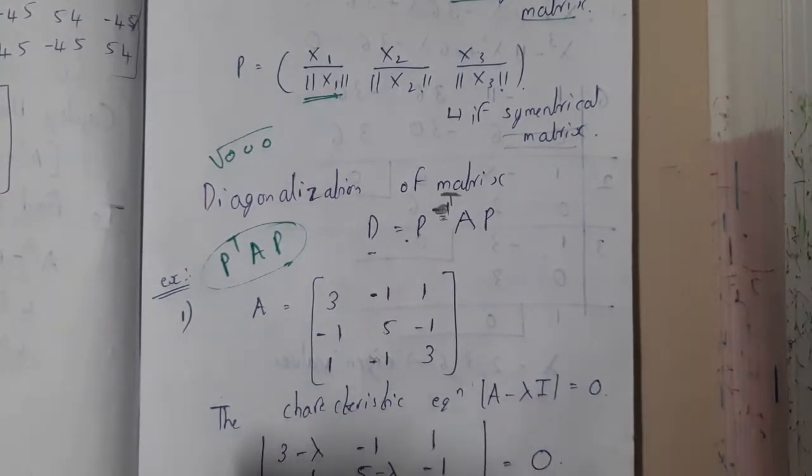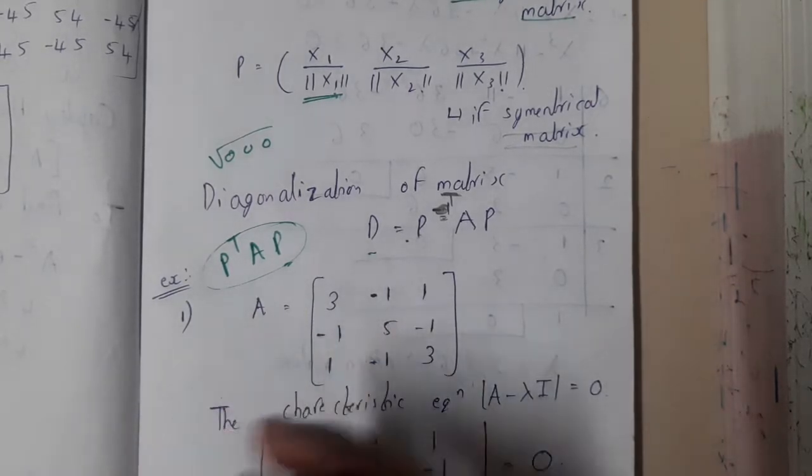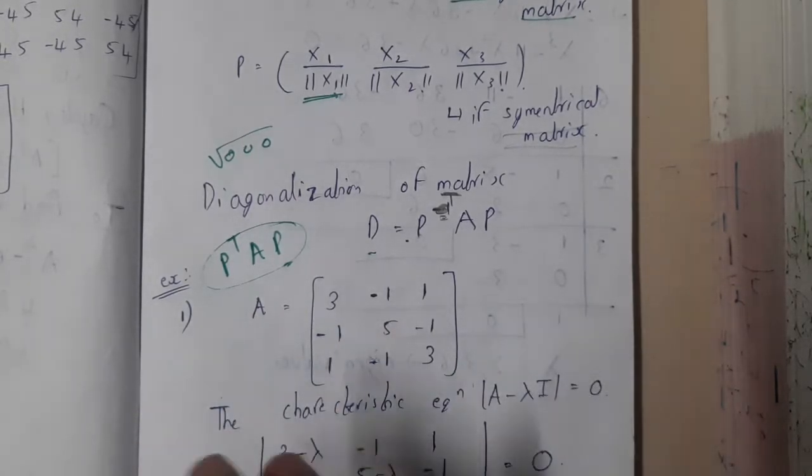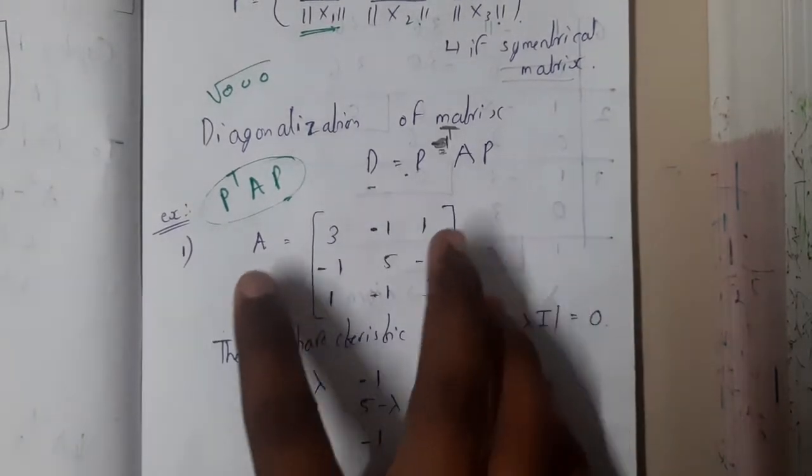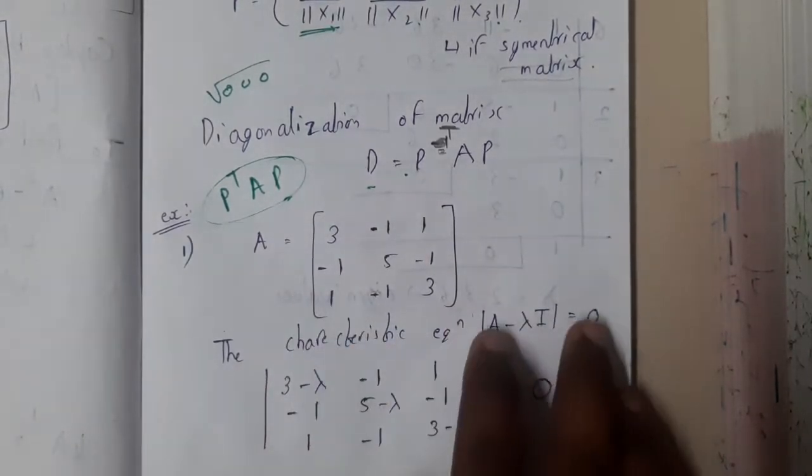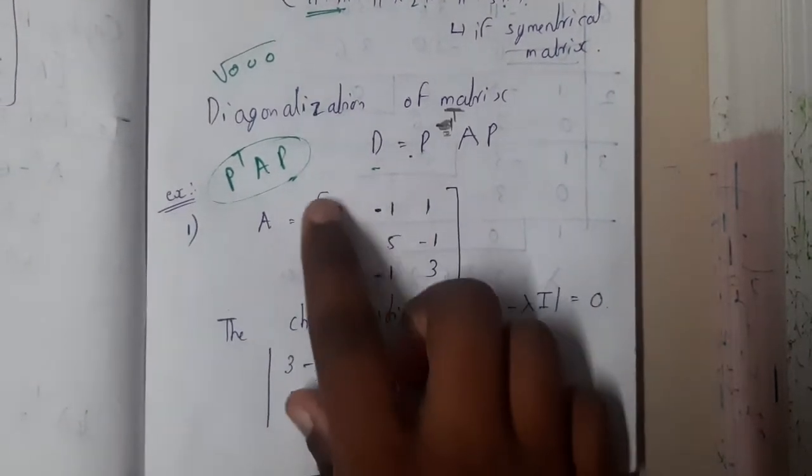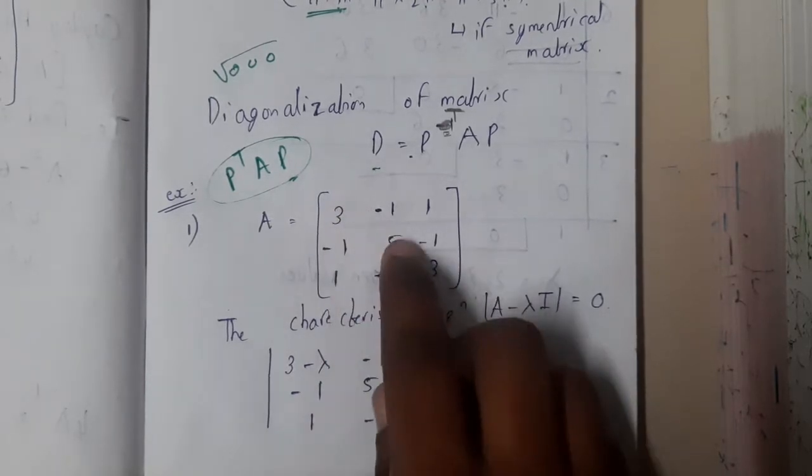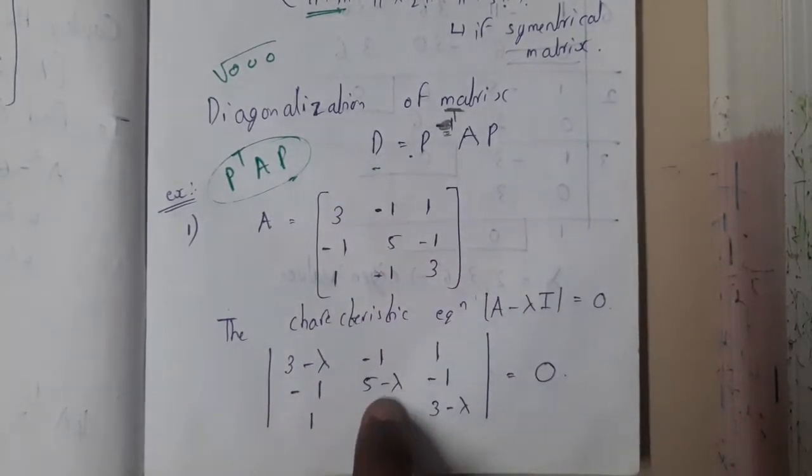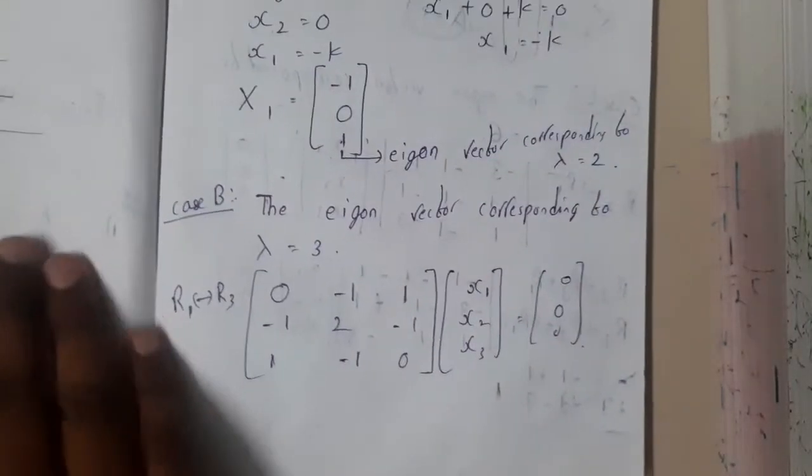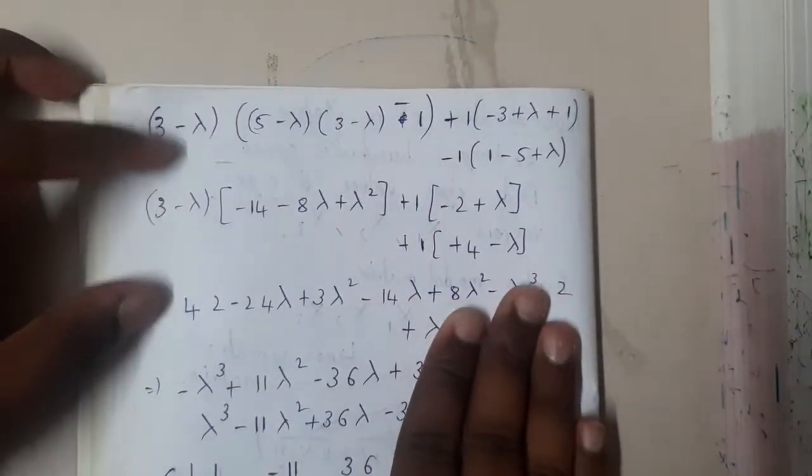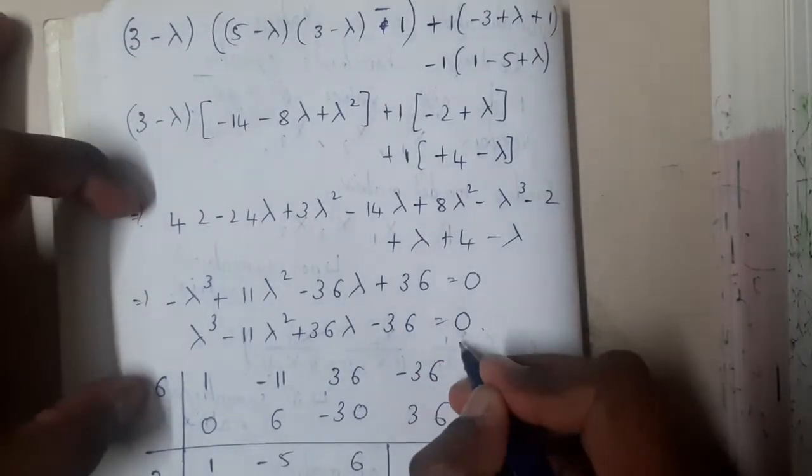For this also I will be just explaining the steps because problem solving might take some time. You can just go through the steps because the solution is written clearly step by step. You can pause the video, you can solve it as I explain the steps. Initially you will be taking the matrix, you will be writing the characteristic equation. So 3 minus lambda, 5 minus lambda, 3 minus lambda. Once you got that, you will be calculating the determinant.